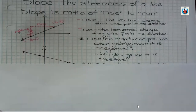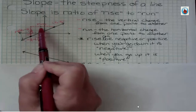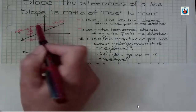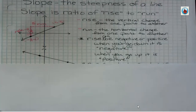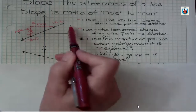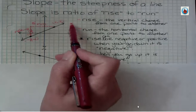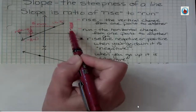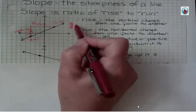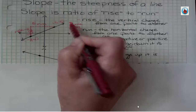And from here over to the other point, we went five places to the right, so our run is five. Since slope is a ratio of rise to run, we would say our slope is three-fifths — rise is three and run is five, so it has to be rise over run, giving us a slope of three-fifths.